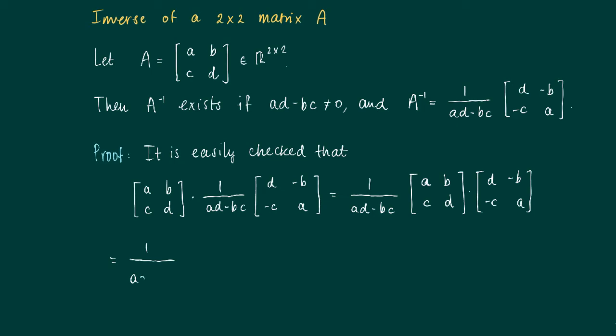So what we get is 1 over ad minus bc and the matrix where the first row, first column is ad minus bc. That's the left upper element.